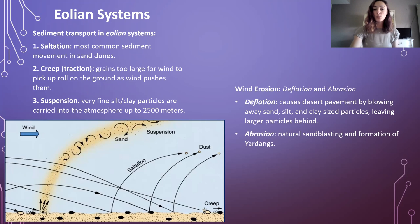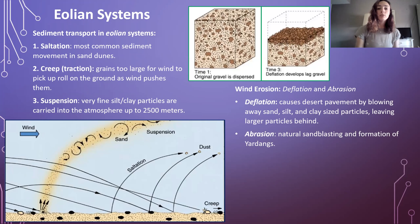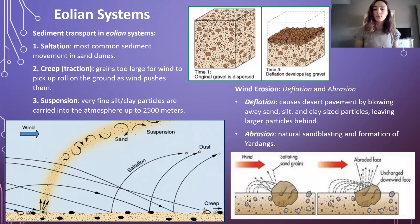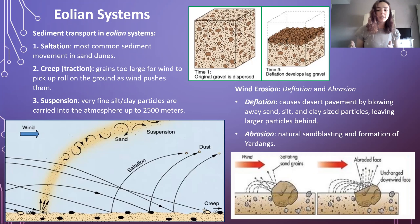Then we have types of wind erosion, like deflation and abrasion. Deflation is shown in this top right figure — what we have here is the formation of desert pavement by blowing away sand, silt, and clay-sized particles, leaving larger particles behind. Deflation leaves what are called lag deposits, or lag gravel. Additionally, we can have abrasion, which is natural sandblasting, and this forms what are called yardangs. Yardangs have a very flat face that was sandblasted or abraded, causing the distinctive morphology shown on the right side of this lower figure.